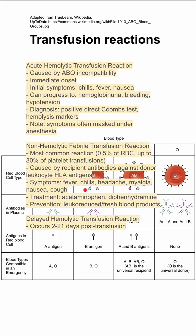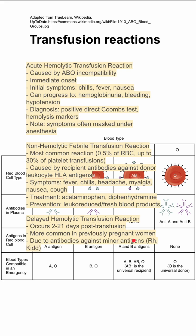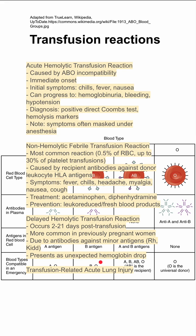Next is delayed hemolytic transfusion reaction. This occurs 2 to 21 days after transfusion. This is most common in previously pregnant women that might have been exposed to some minor antigens from the red blood cells, like the RH or KID antigens. It presents as an unexpected hemoglobin drop.